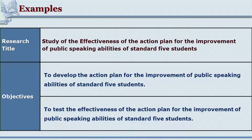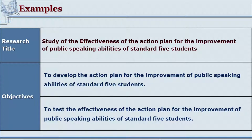The title is: 'Study of the effectiveness of the action plan for the improvement of public speaking abilities of standard 5 students.' Here, the researcher has identified that the public speaking abilities of standard 5 students need improvement, and is trying to judge whether it can be addressed with an action plan, giving a research base to the effort. The first objective is: to develop the action plan for the improvement of public speaking abilities of standard 5 students. The researcher must first develop the action plan, so this first step becomes the first objective.